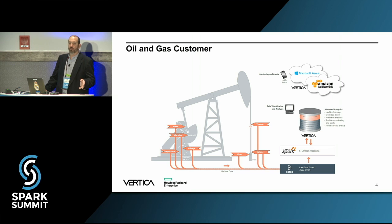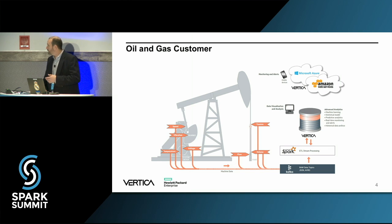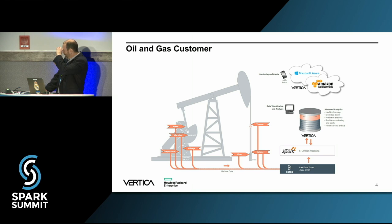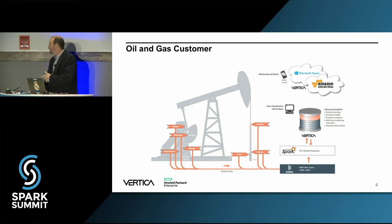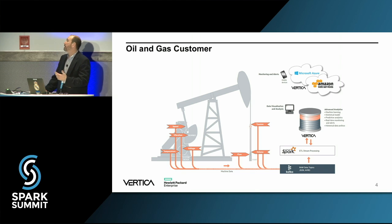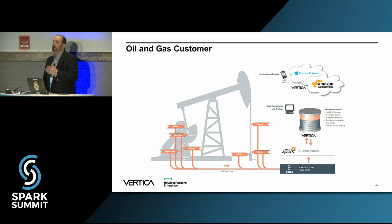Here's a use case of an oil and gas customer. These orange flags represent sensors — vibration, temperature, flow. The data goes in through Kafka and then into Spark. You can do your Spark analysis, but then you can write the results into Vertica to take advantage of its strengths. Or you can write to HDFS and Vertica can access the files from there.